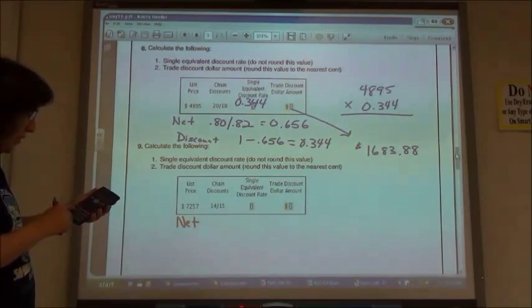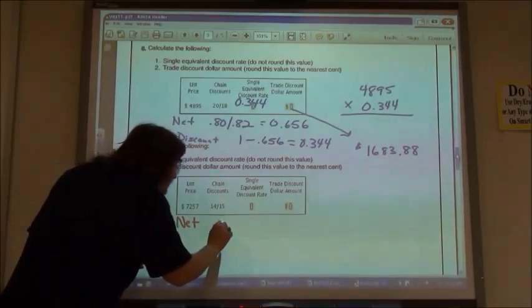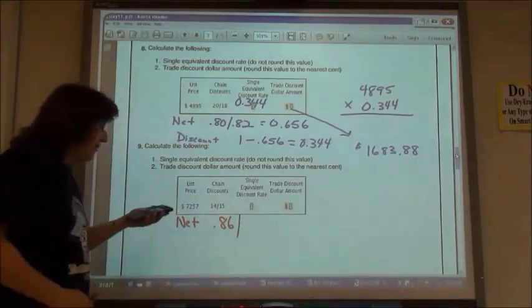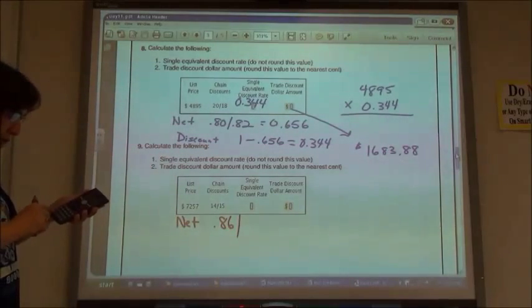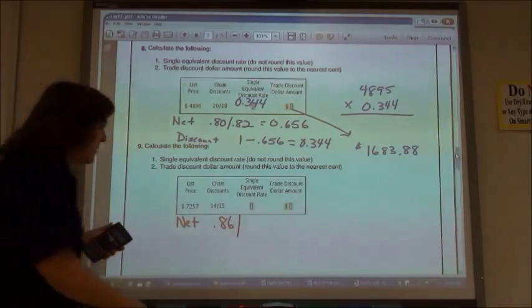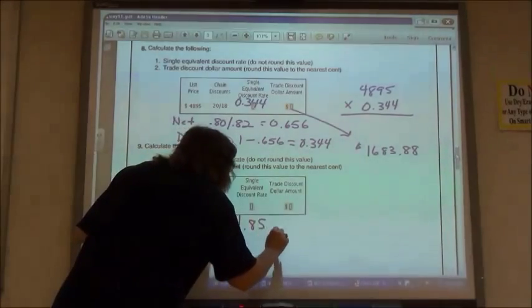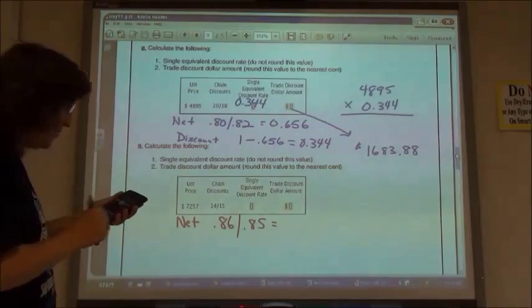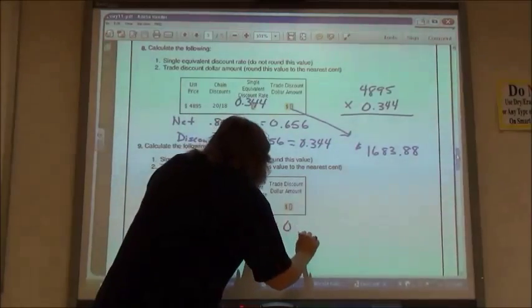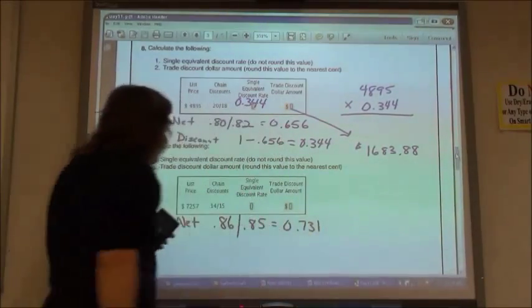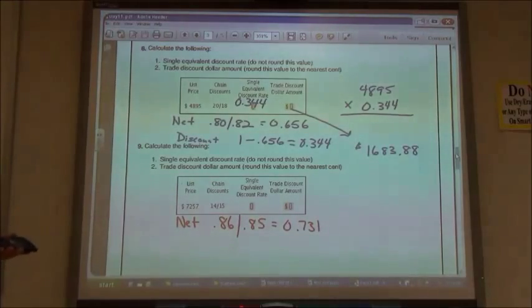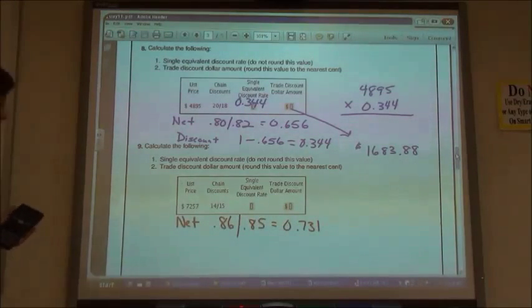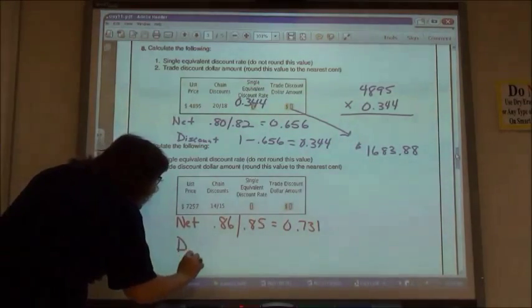If I have a 15% discount, 100 minus 15 gives me 85%. And so 0.86 times 0.85 gives me 0.731. My net equivalent would be 73.1%.